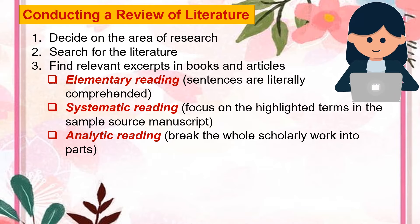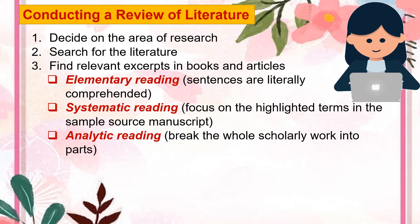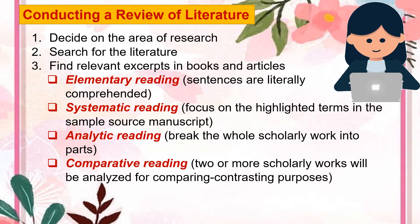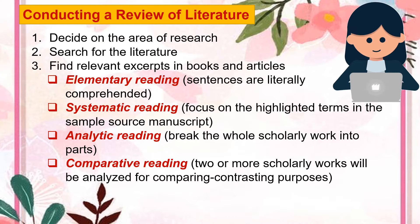Analytic reading — this type of reading requires the researcher-reader to break the whole scholarly work into parts for better understanding. It may also be observed here that the researcher-reader establishes connection with the author by asking the five W's and one H questions through annotation. Use of a dictionary for concept clarification is also often considered. The notes made from the analysis are then synthesized and will serve as an output. Comparative reading — the fourth type. This type considers two or more scholarly works which will be analyzed for comparing and contrasting purposes. The various viewpoints of the authors regarding particular concepts and principles will be carefully observed, and the generalized summary of the analysis serves as an output.